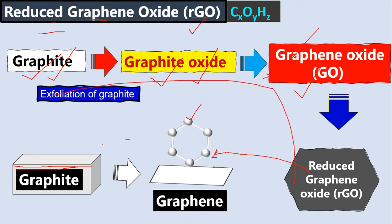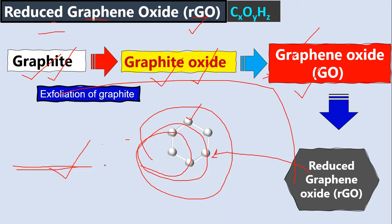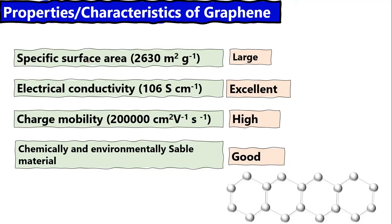But why do we use this path? Because getting pure graphene directly from graphite is very, very difficult, and for mass production it is very, very difficult. We look for graphene because it is a very interesting material — it has a high specific surface area, excellent electrical conductivity, high charge mobility, and it is chemically and environmentally stable.